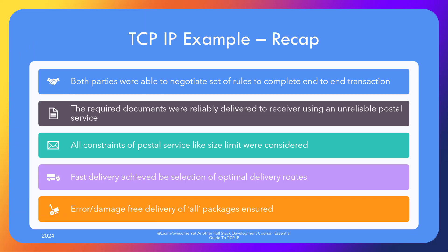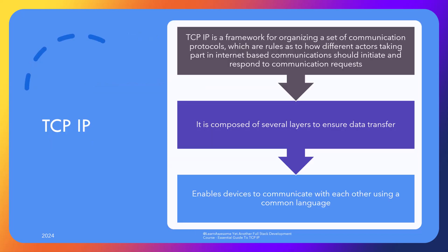So what did we accomplish here? Two things. First, we were able to agree upon a set of rules or protocol to complete an end-to-end transaction, with the client requesting services on a prescribed form all the way to payment acknowledgement. Secondly, your organization was able to do reliable communication with the client office, handling all the constraints of postal services — from packet size limits to optimizing delivery via cost and time, and ensuring all packets are not only received but also received intact via acknowledgements and resending undelivered or damaged packages. So let's bring TCP/IP into the picture. TCP/IP is a framework for organizing a set of communication protocols, which are rules as to how different actors taking part in internet-based communications should initiate and respond to communication requests.